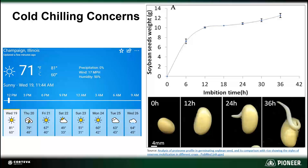If we lose corn stand or if the emergence is not uniform, yields will likely be reduced in corn. However, soybeans are much more forgiving to uneven emergence and reduced stands and typically show a larger yield advantage to early planting. Soybeans also imbibe water typically in about 12 hours, or half the time that it takes corn to complete this process.